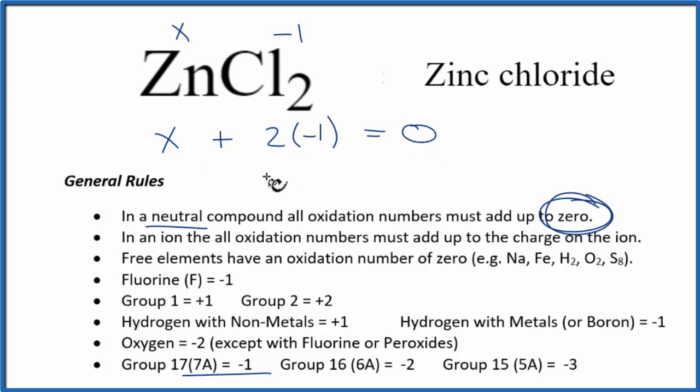So we have x plus the minus two, so x equals a positive two. And that's the oxidation number on the zinc here in ZnCl2, zinc chloride.